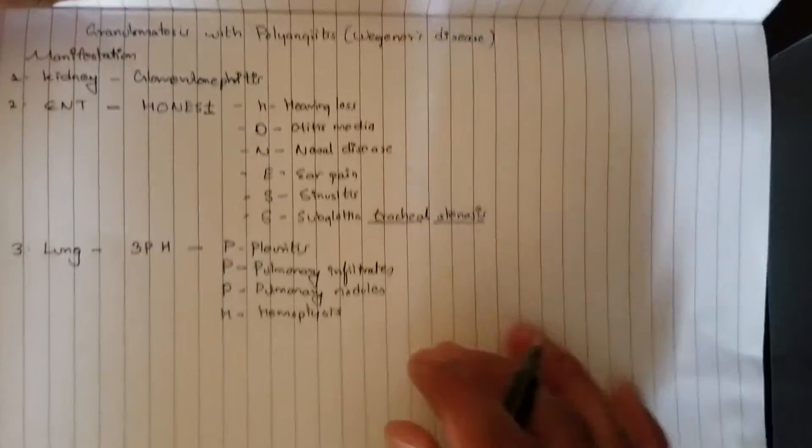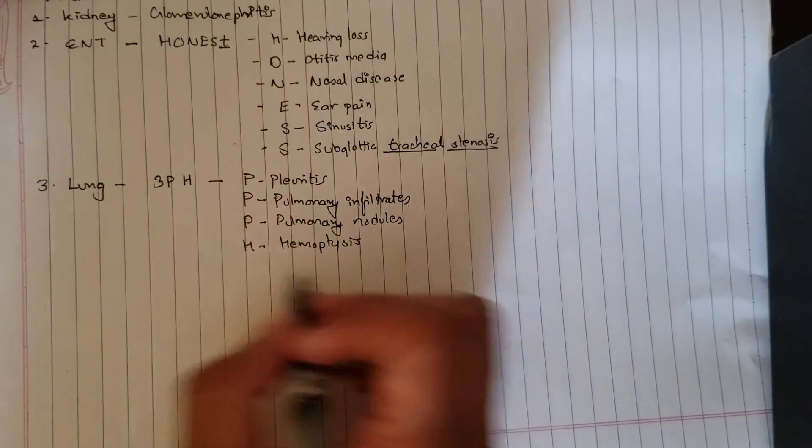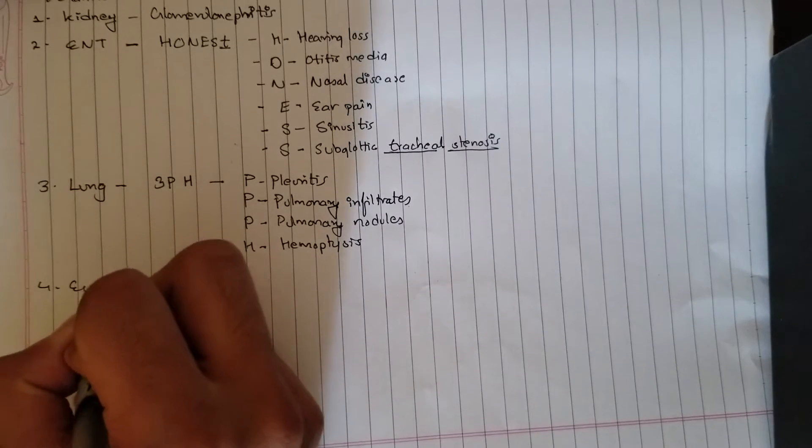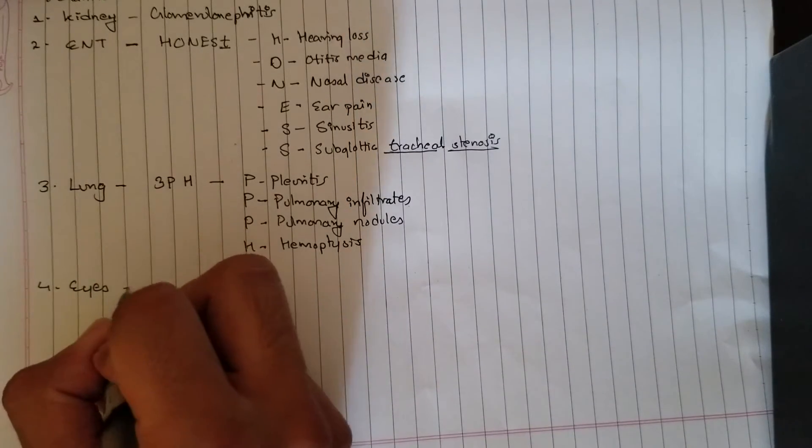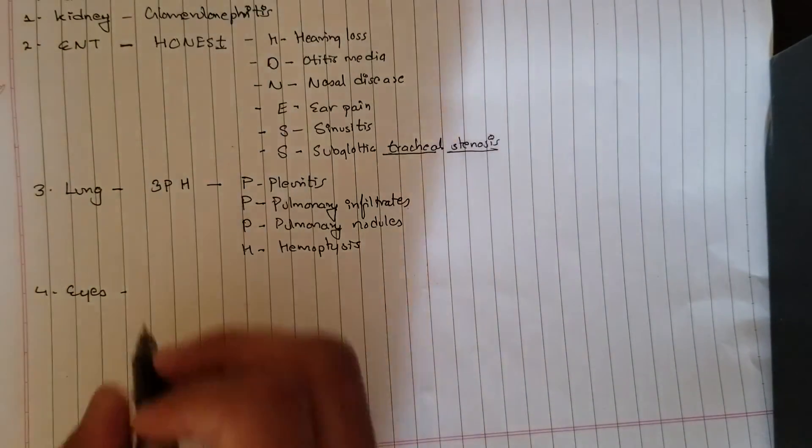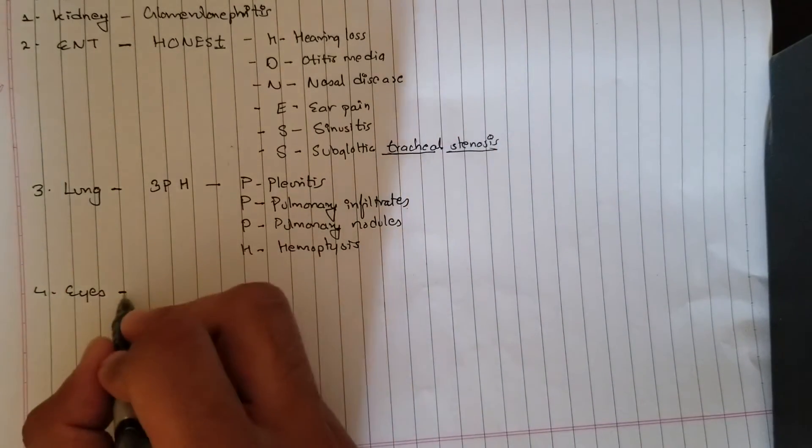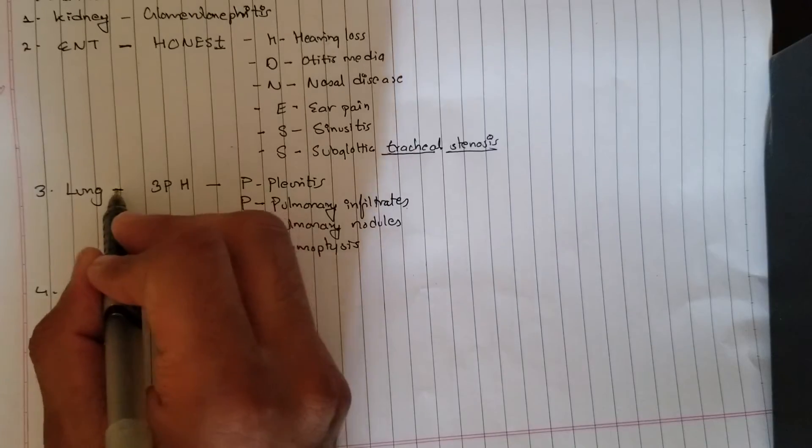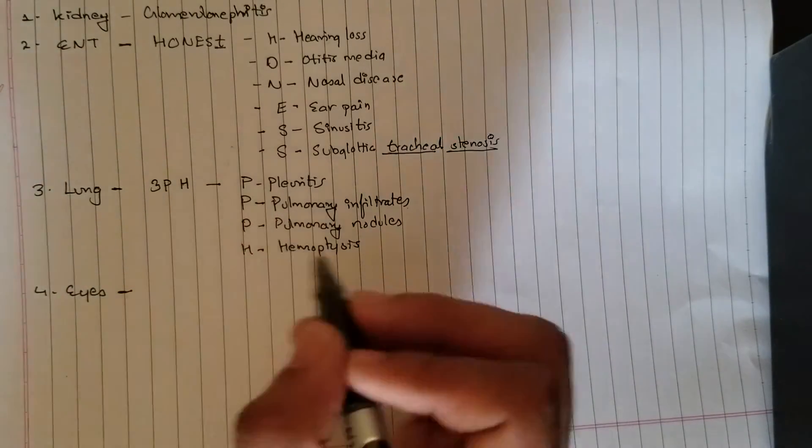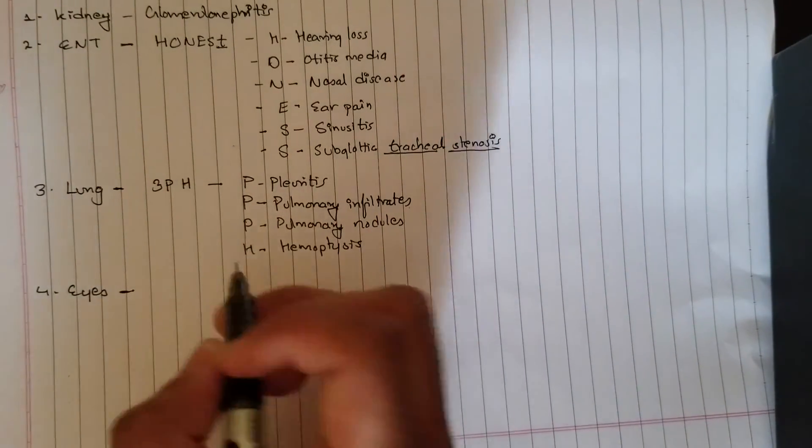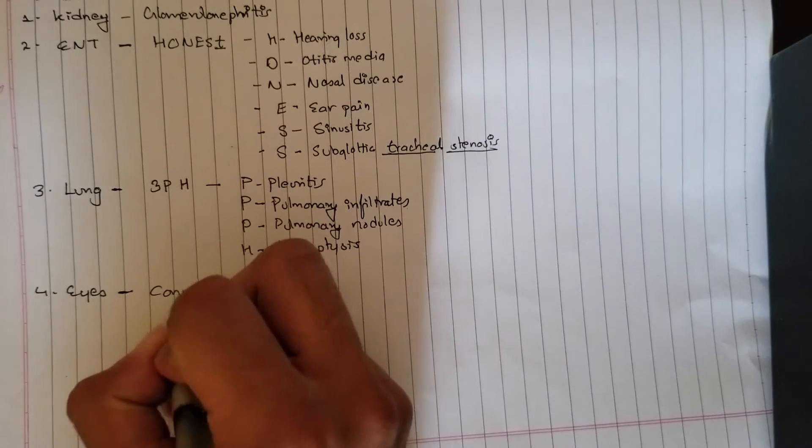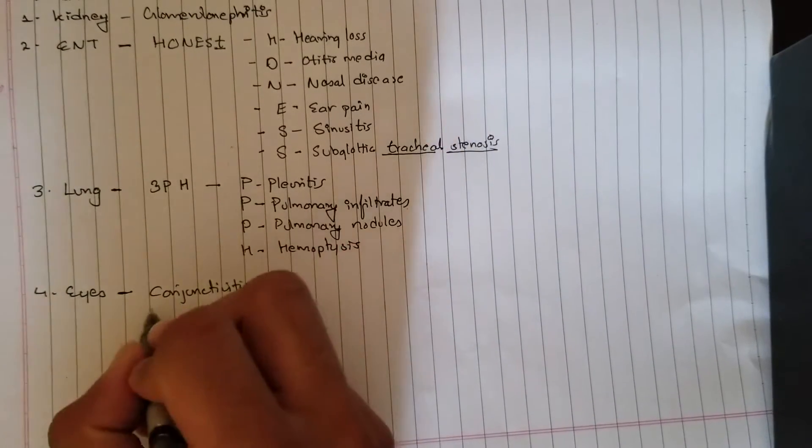I haven't actually created a mnemonic for the manifestations in the eyes because it's just too simple. Just remember all the inflammations that you can find in the eyes, like conjunctivitis, inflammation of the conjunctiva.